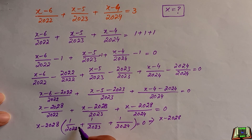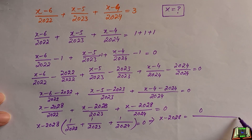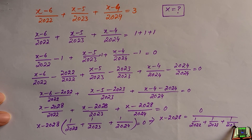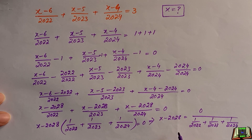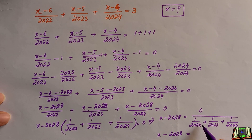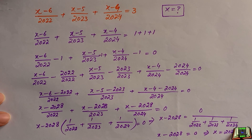In the next step, we take the bracket part to the right-hand side, giving 0 divided by (1 over 2022 plus 1 over 2023 plus 1 over 2024), which equals x minus 2028. Since 0 divided by any number is 0, we get x minus 2028 equals 0, so x equals 2028. This is the final and required answer.